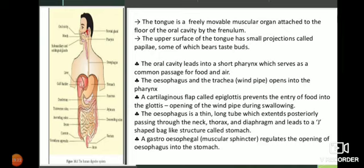The small intestine then opens into the large intestine. The large intestine connects to the rectum, and finally the rectum connects to the anus. Undigested food material is released from the body through the anus. So when food enters the mouth, it travels through the esophagus, stomach, small intestine, large intestine, rectum, and finally exits through the anus. This entire path is called the alimentary canal.